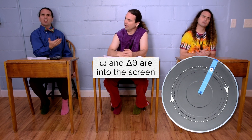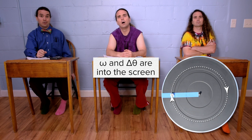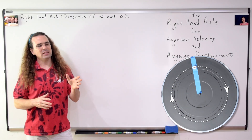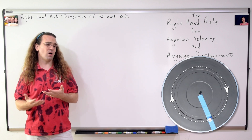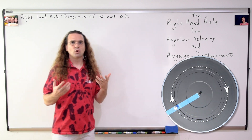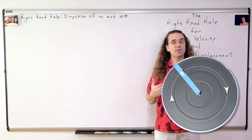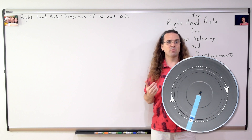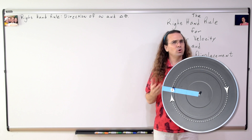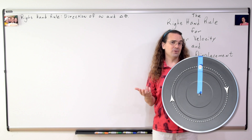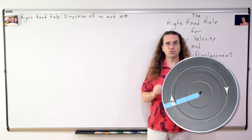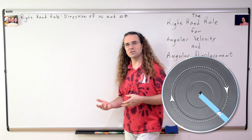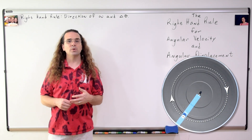Why don't we just use clockwise and counterclockwise? I think that would be easier. Looking at this example, Billy, you as the observer, would you say this mint is revolving in the counterclockwise or the clockwise direction? That looks clockwise to me. But to me, someone who is on the other side of the turntable, the mint appears to be revolving in a counterclockwise direction. So who is correct? We are both correct. It just depends where the person is standing who is describing the angular direction. Clockwise and counterclockwise are observer dependent directions. For physics, we need angular directions that are not observer dependent, which is why we use the right hand rule.